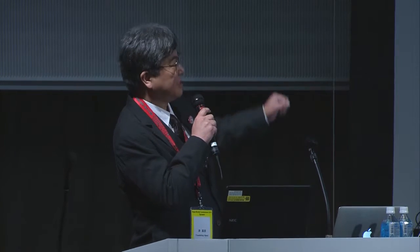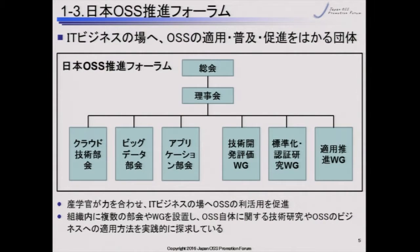The Japan OSS Promotion Forum is a kind of educational body to promote OSS. This shows the overview of the structure of the forum — a collaboration among academia, industry, and government to disseminate OSS in different occasions. A key characteristic of this organization is that there are subcommittees and working groups. They are not just discussing, but working and developing on their own — that's how we try to disseminate OSS.